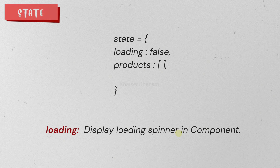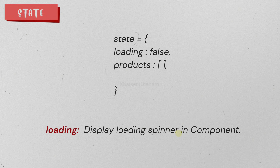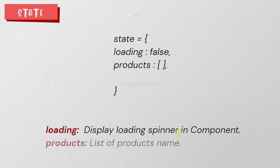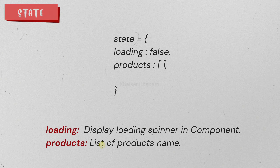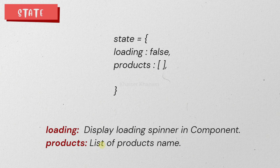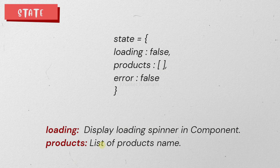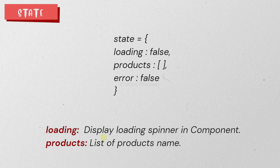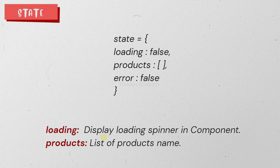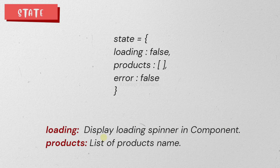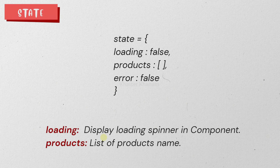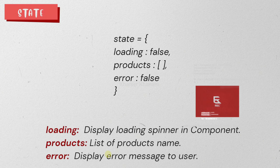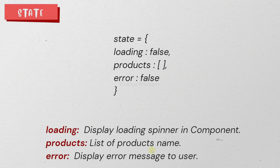The second property is 'products', with an initial value of an empty array. Initially we have no data because the data is fetched in the background, so the initial value is an empty array. Inside this, we are going to store all the product names we get from the API. Finally, we have an 'error' property. Initially we are not going to have any error — we will start fetching the data, and only if there is an error will we display it. So initially, we assign error the value false, and using this we can display an error message to the user.